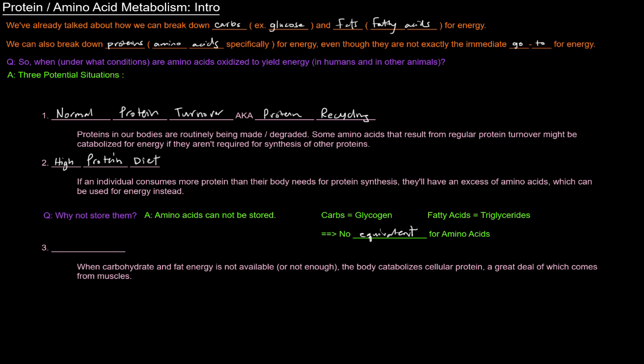The third situation under which this catabolism of amino acids can occur is during starvation conditions. During starvation, carbohydrate and fat energy is not available in high enough quantities or really at all. And so the body begins to catabolize cellular protein. A lot of that protein that it catabolizes is coming from the muscles. Proteins being broken down into amino acids, those amino acids are then being used for energy during starvation.